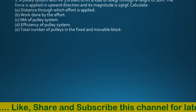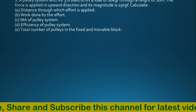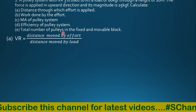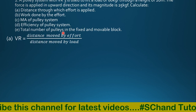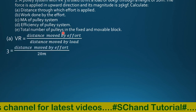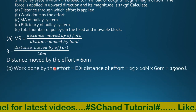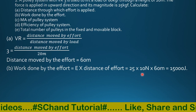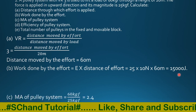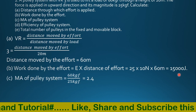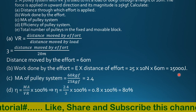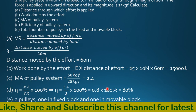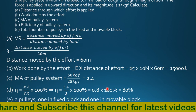A pulley system with velocity ratio 3 is used to lift a load of 60kg force through a height of 20m. The force is applied in the upward direction and its magnitude is 25kg force. The distance to which the effort is applied is calculated using: velocity ratio equals distance moved by effort over distance moved by load, giving 60m. Work done equals effort into distance moved — 25kg force converted to Newton gives 10,000 joules. Mechanical advantage equals 60 over 25, which is 2.4. Efficiency equals mechanical advantage over velocity ratio, coming to 80%. Total pulleys: two — one in the fixed block and one in the movable block.